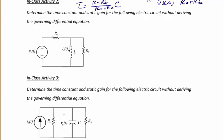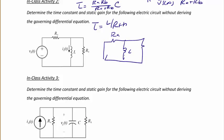Let's determine the time constant and static gain for an RL circuit. We find the Thevenin equivalent resistance seen by the inductor, so tau equals L over R_Thevenin. We turn off the voltage source and have resistor R_A, inductor L, and resistor R_B. Just like before, R_Thevenin seen by the inductor is R_A in parallel with R_B, or (R_A · R_B)/(R_A + R_B).